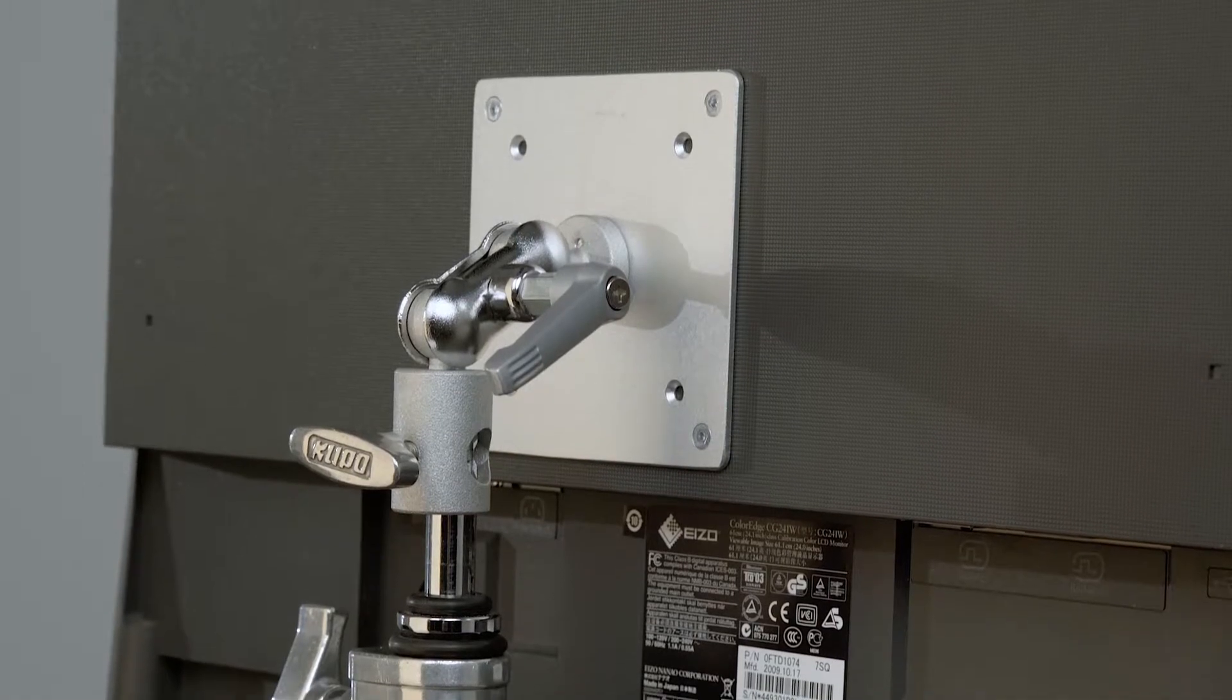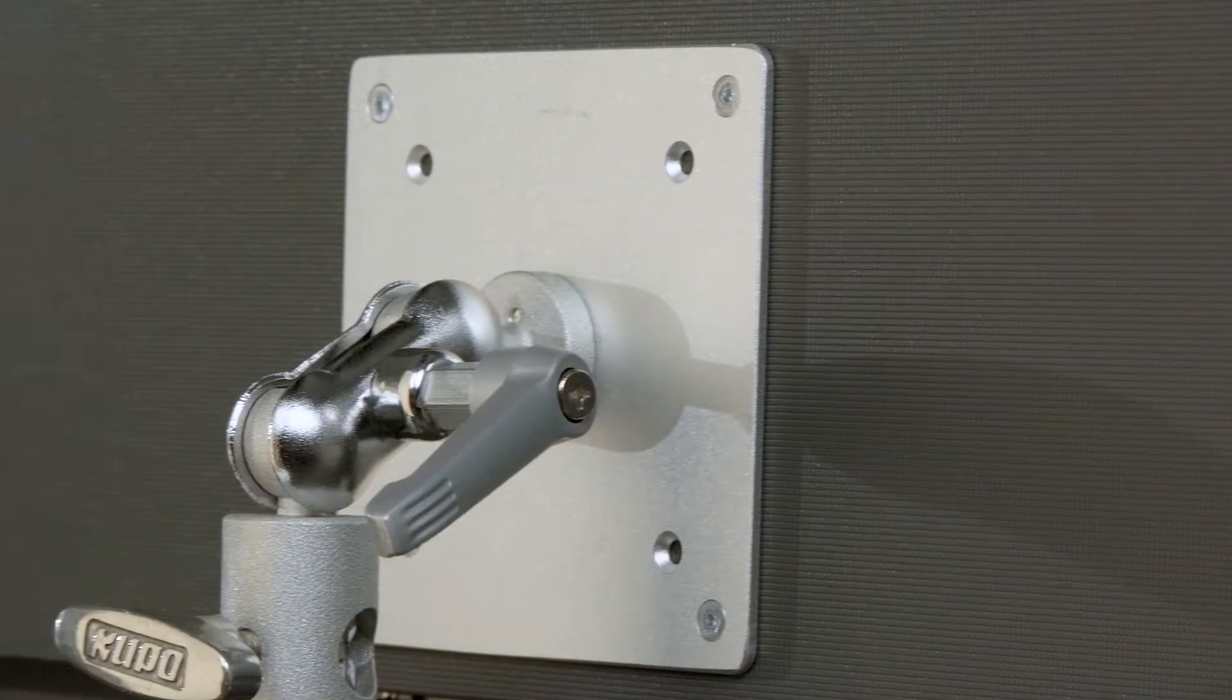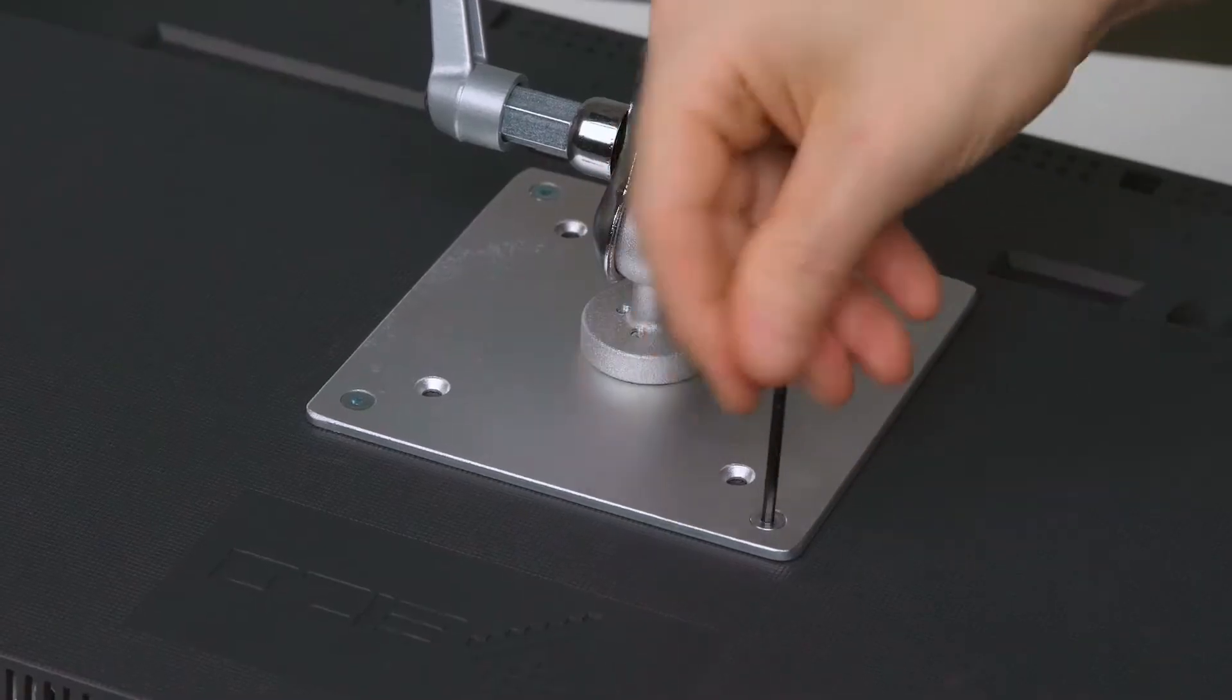The Kupo Monitor Adapter lets you mount any lightweight monitor with an industry standard 3 or 4 inch VESA mount. Simply use the supplied 4 screws and mount it to the back of your monitor.